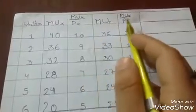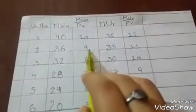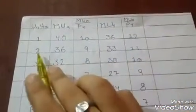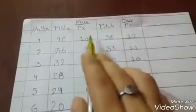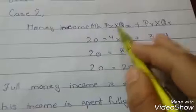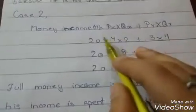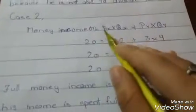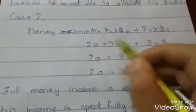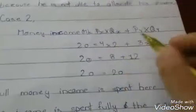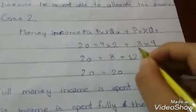In the next case, where MUX upon PX and MUY upon PY are equal, let's look at case 2. Here money income is equal to PX into QX plus PY into QY. How much money income do I have? 20 rupees. What is the price of commodity X? 4. How many units of commodity X? 2. What is the price of commodity Y? 3. How many units? 4.